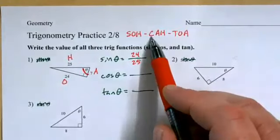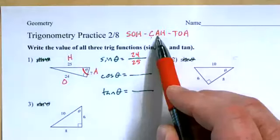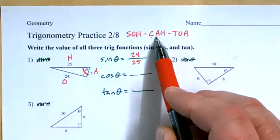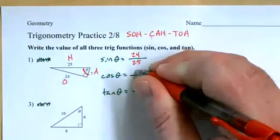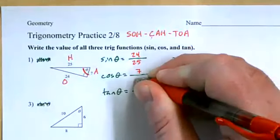Cosine is adjacent on top and hypotenuse on the bottom. Adjacent over hypotenuse. Adjacent was 7, hypotenuse is 25.